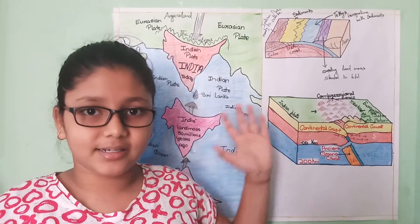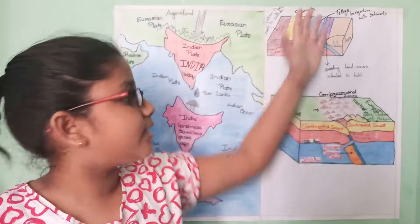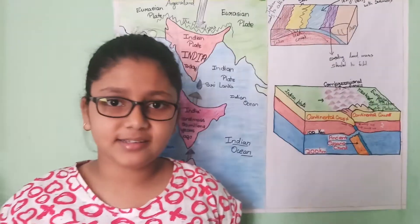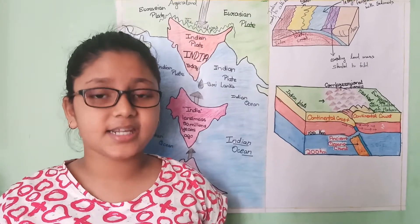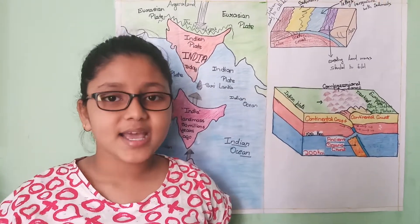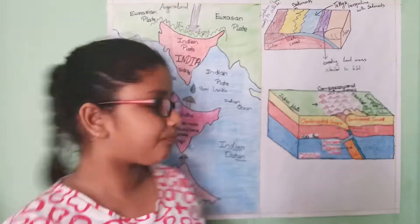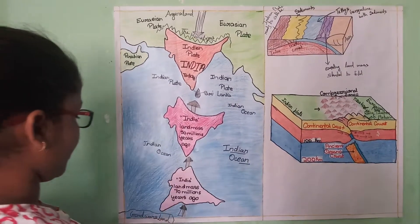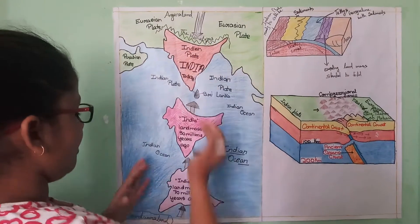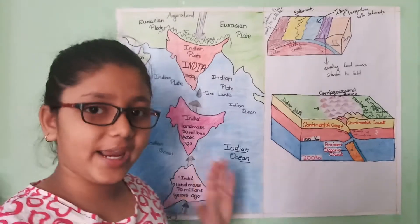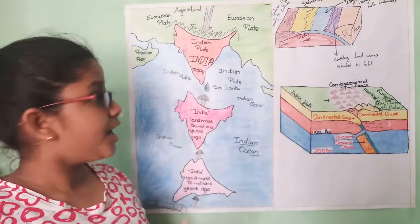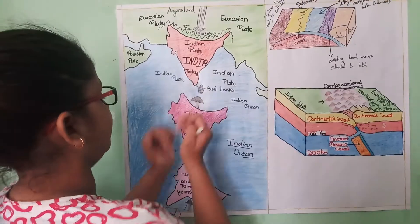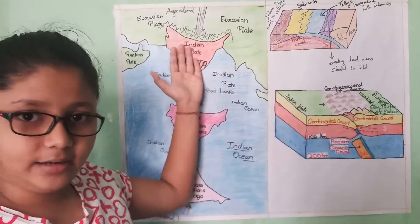Now we will discuss this story by looking at these pictures. In this picture, we will see how the Indian plate had broken from the Gondwana land and started moving towards the north. Here is the Gondwana land, and the Indian plate has broken from it. Before 70 million years ago, India was here, and before 50 million years ago, India was here, and today India is here.